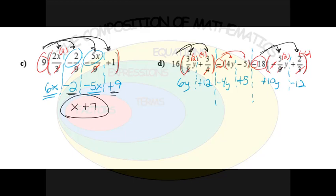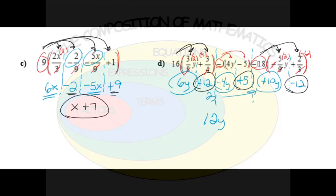We're left with just terms. For the y terms we have 6y, negative 4y, and 10y. So 6y and negative 4y is 2y, and 2y plus 10y is 12y. For the constants we have positive 12, positive 5, and negative 12 — the positive 12 and negative 12 zero out, leaving just positive 5. So the final answer is 12y plus 5. It doesn't matter how big the problem is as long as we keep our problem structure, keep our terms aligned, and slowly work through.